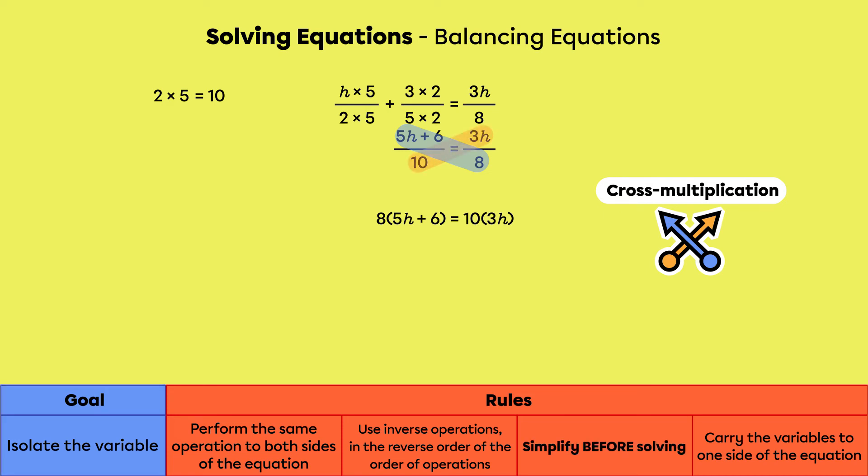On the left side, we need to distribute the 8 to the two terms in the brackets. 8 times 5h gives 40h, and 8 times 6 gives 48. On the right side, 10 times 3h gives 30h.